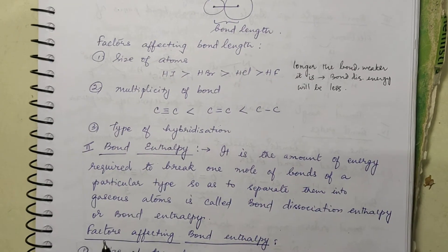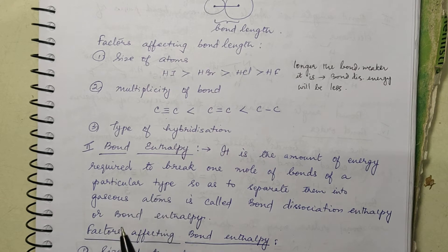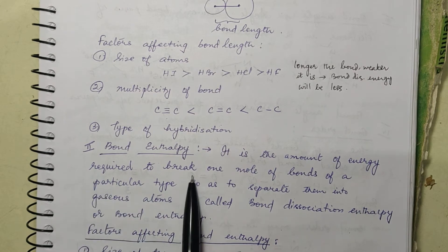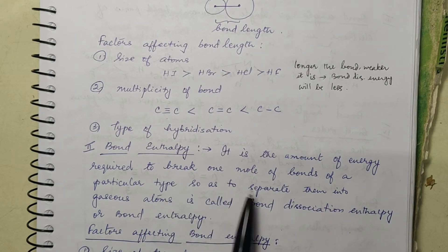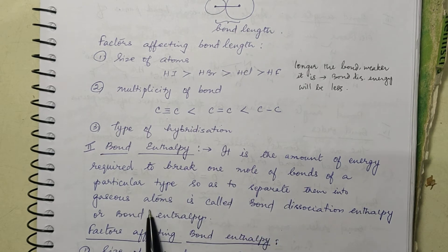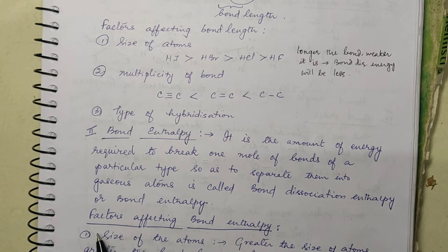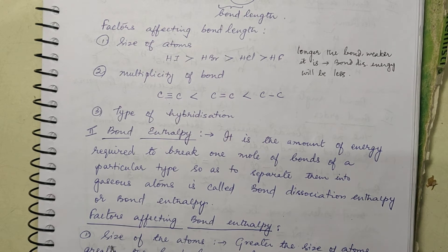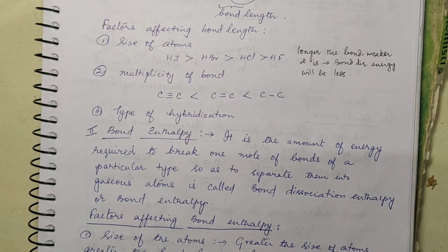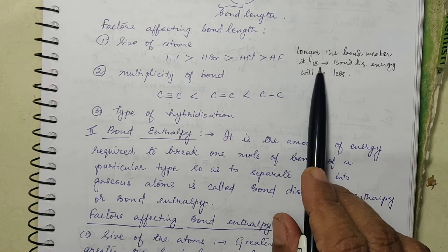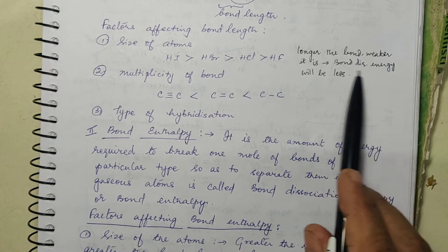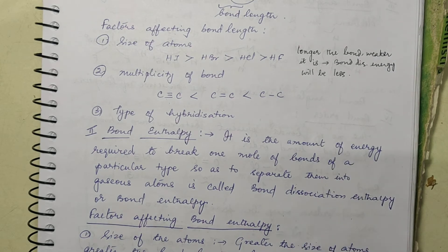Then comes bond enthalpy. What is bond enthalpy? It is the amount of energy required to break one mole of bonds of a particular type so as to separate them into gaseous atoms. This is called bond dissociation enthalpy or bond enthalpy. The factors affecting bond enthalpy: again, size of atoms — greater the size, greater the bond length, lesser the bond strength, lesser the bond enthalpy. Longer the bond, weaker it is and bond dissociation energy will be less.